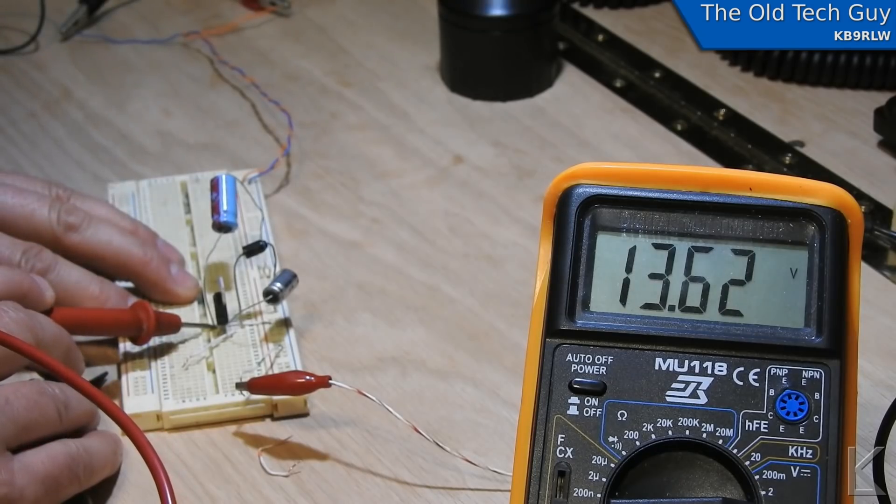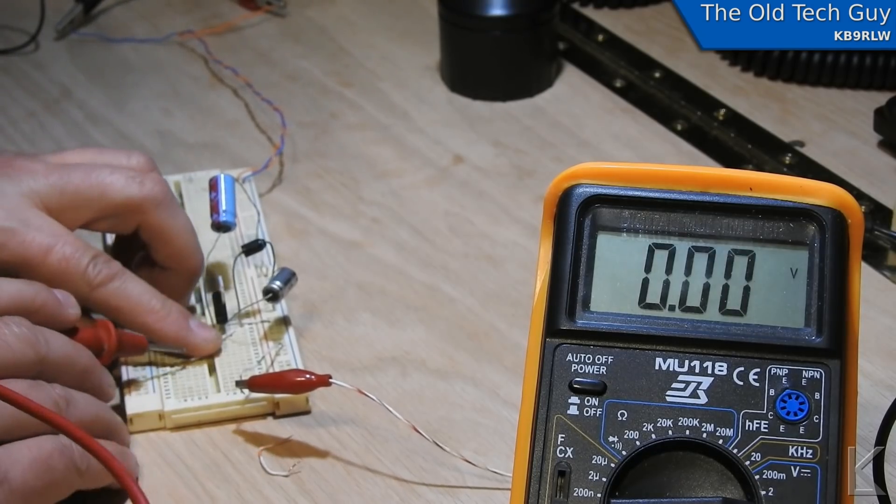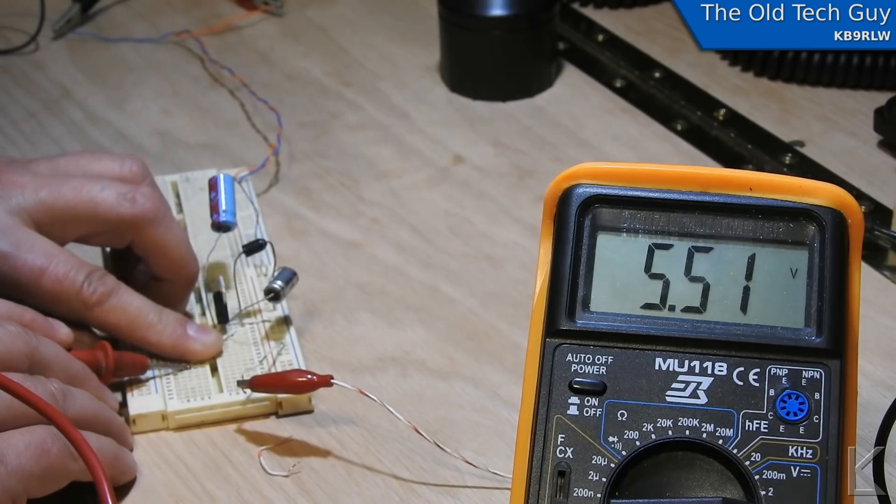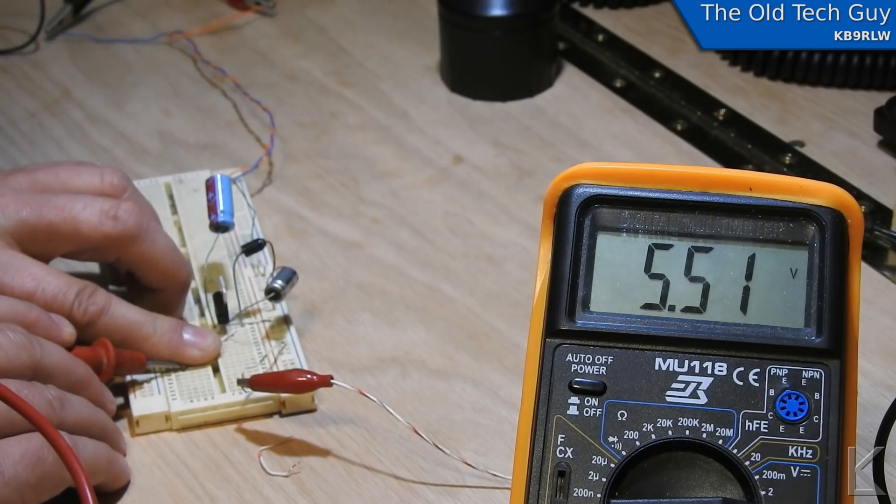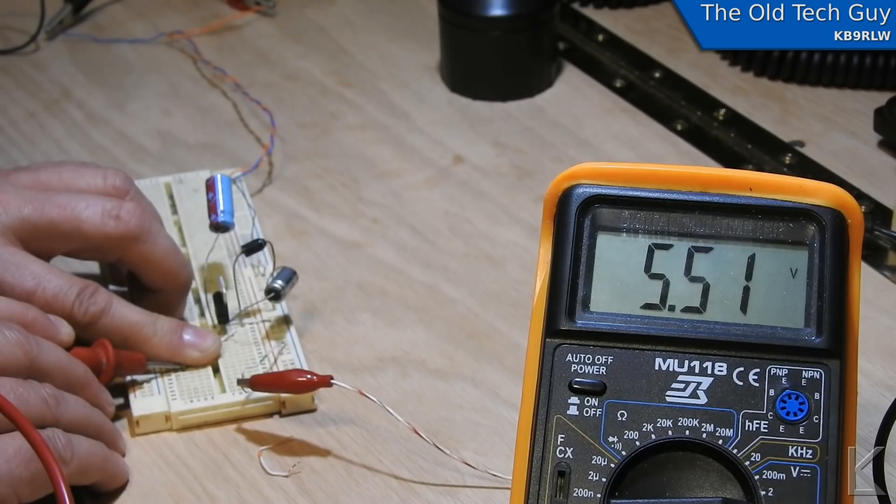And now let's take a look at our voltages. Input voltage is 13.6. Output voltage is 5.51. So as you can see the 6 tenths of a volt drop across the diode has raised the reference for the 7805. And we've raised its output voltage by about 6 tenths of a volt.